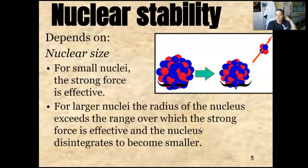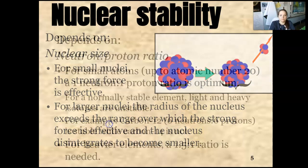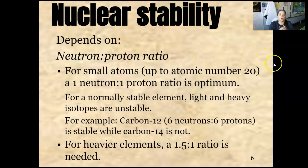So we have nuclear stability. This is definitely dependent on the size of the atom. For small nuclei, the strong force is very effective. It can keep everything together. But as you get bigger and bigger and bigger, that strong force kind of loses its force. And when the radius of the nucleus exceeds a certain range, making that strong force effective, the nucleus disintegrates to become smaller. It separates. This is dependent on the neutron-proton ratio. For small atoms up to 20, you have a one-to-one. That is the best, most stable thing.